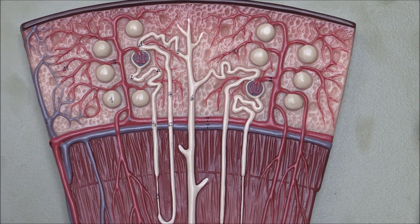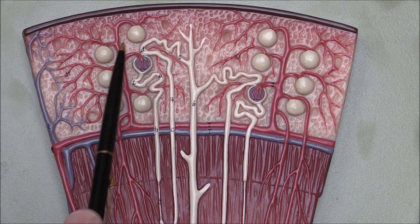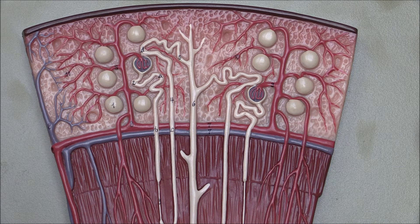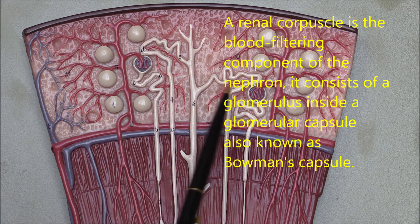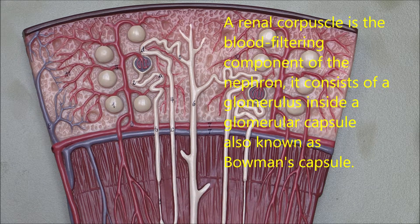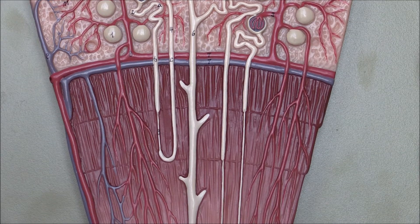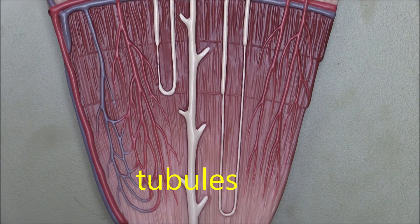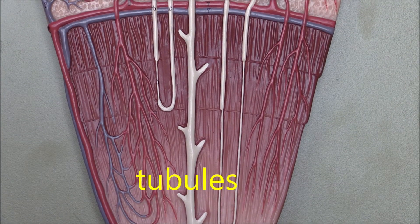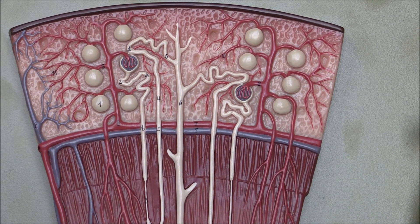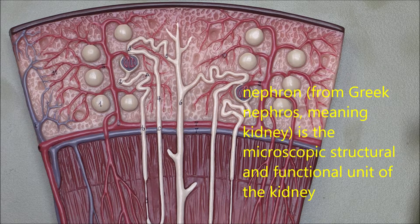The structures we see in the cortex relate to the nephron, which is the whole structural unit of the kidney. It is in two parts: at the top we have the renal corpuscles, and then going through the cortex down into the medulla we have the renal tubules. So a nephron consists of the corpuscle and the renal tubule — the two parts of the functional unit of the kidney.